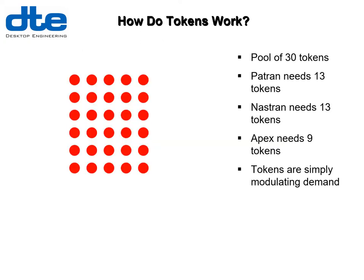So let's talk about how these tokens work. A popular misconception is that they work like poker chips at Vegas, so as you use them they disappear and you run out, which is not the case. I'm going to base this example on 30 tokens. Three of the products — Patran, Nastran and Apex — have different token counts: 13, 13 and 9. Imagine a scenario where your user comes in in the morning and opens Patran to do some FEA modeling, so he's got 13 tokens out, and then he wants to run the analysis in Nastran, which takes a further 13 tokens, leaving just four available.